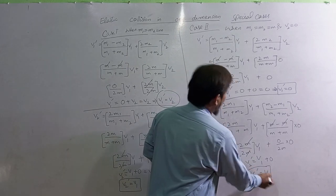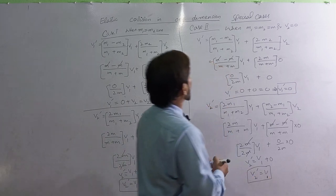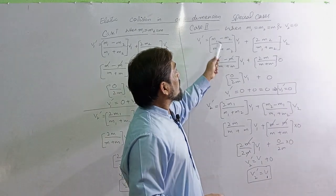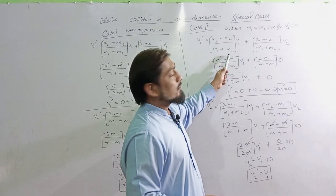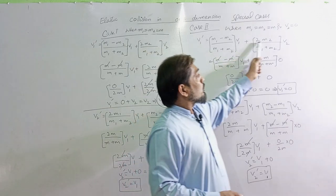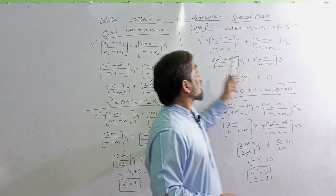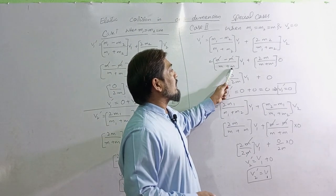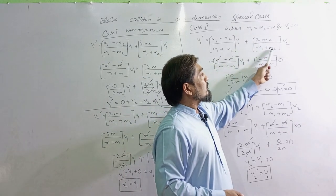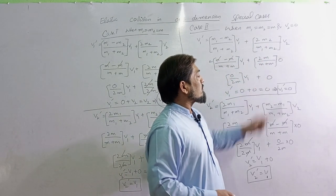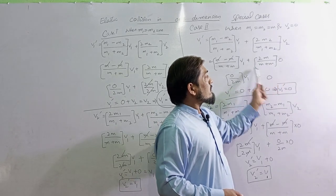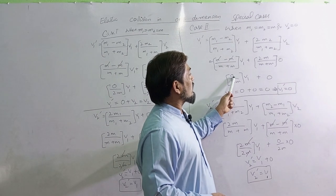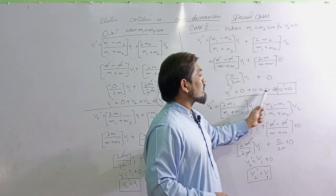V1' equals M minus M divided by M plus M times V1 plus 2M divided by M plus M times V2. So M divided by 2M times V1 plus 2M divided by 2M times 0. Because V2 is 0, this becomes 0. So V1' equals 0.